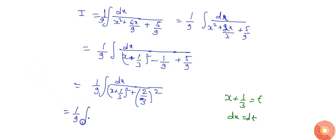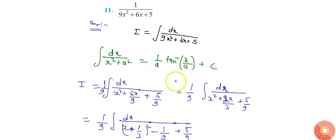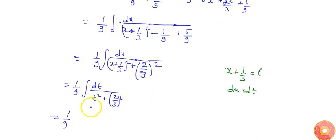I will get (1/9)∫dt/(t² + (2/3)²). From the formula of integration I already written, (1/a)tan⁻¹(x/a), it will be (1/a) is 2/3, so tan⁻¹(t/(2/3)).